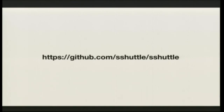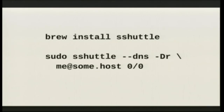SSHuttle is not a true VPN, but it does a very good job of faking it using a combination of transparent proxying and clever firewall rules on the client side. Importantly, this doesn't require root privileges on the far end of the connection or any setup of network interfaces, routes, or that kind of thing. I'm on a Mac and I use Homebrew, so all I had to do to install this is run 'brew install sshuttle'. It's probably already packaged for your distro and shouldn't be too hard to install by hand if necessary.